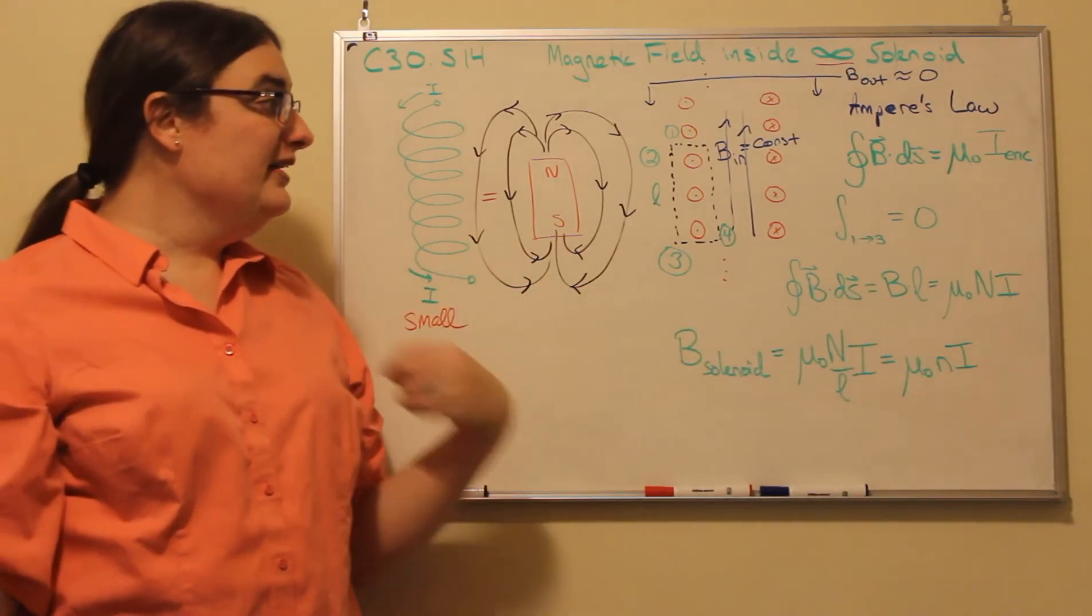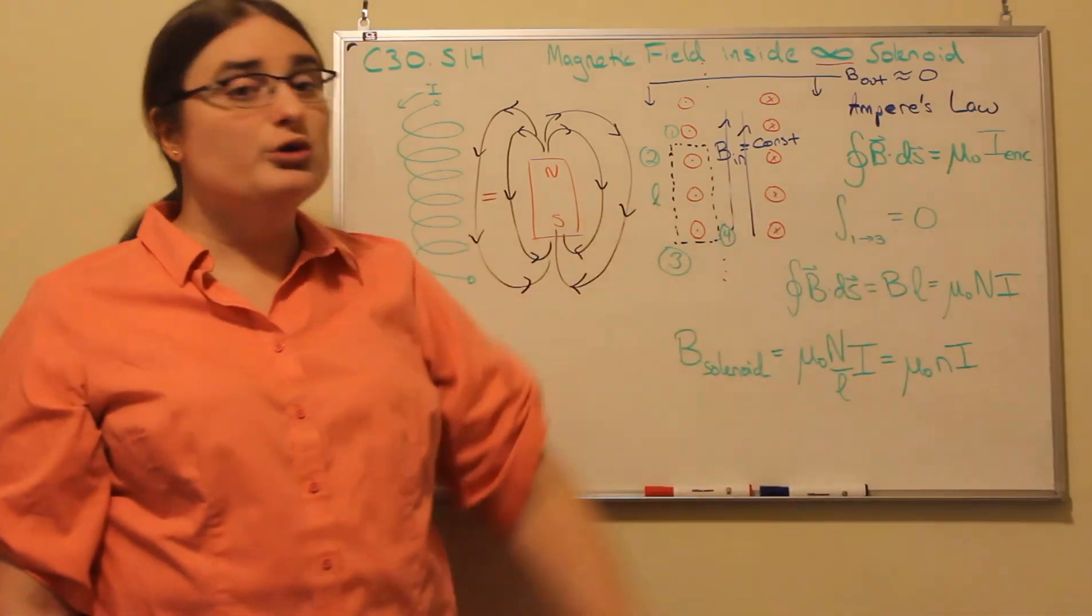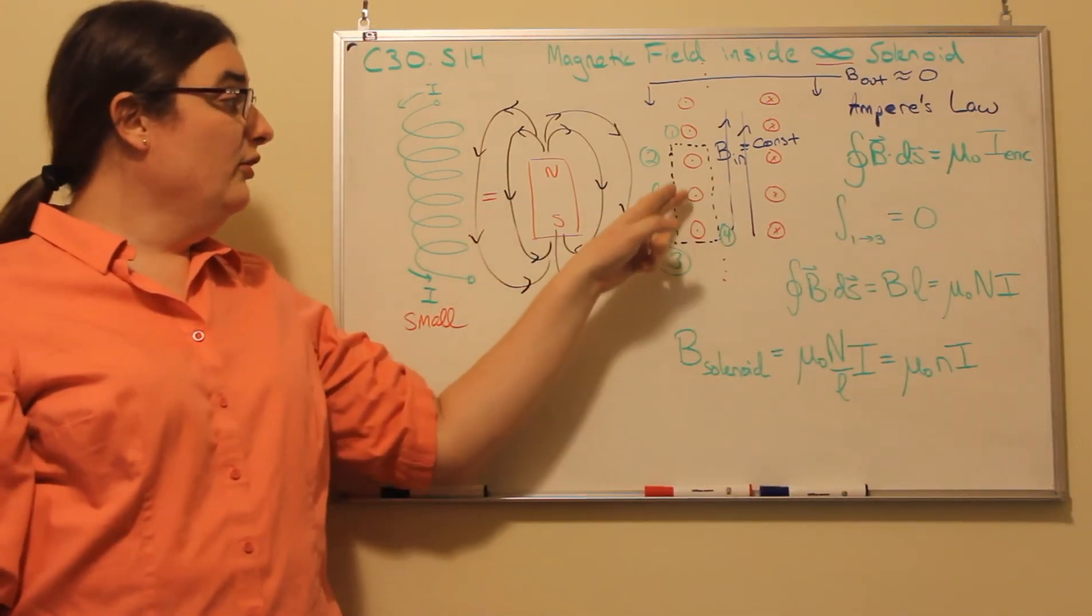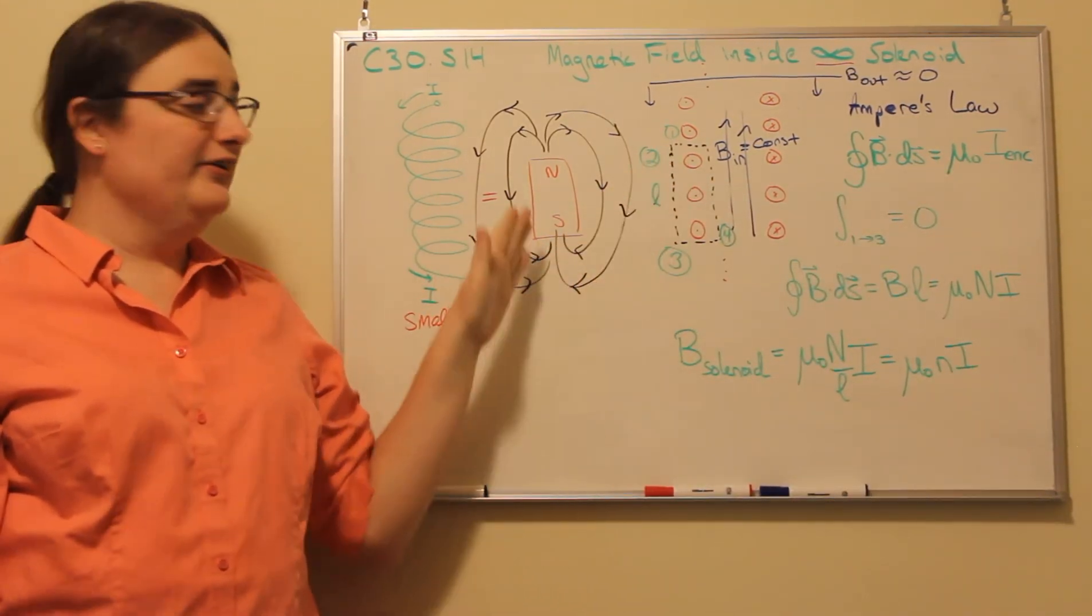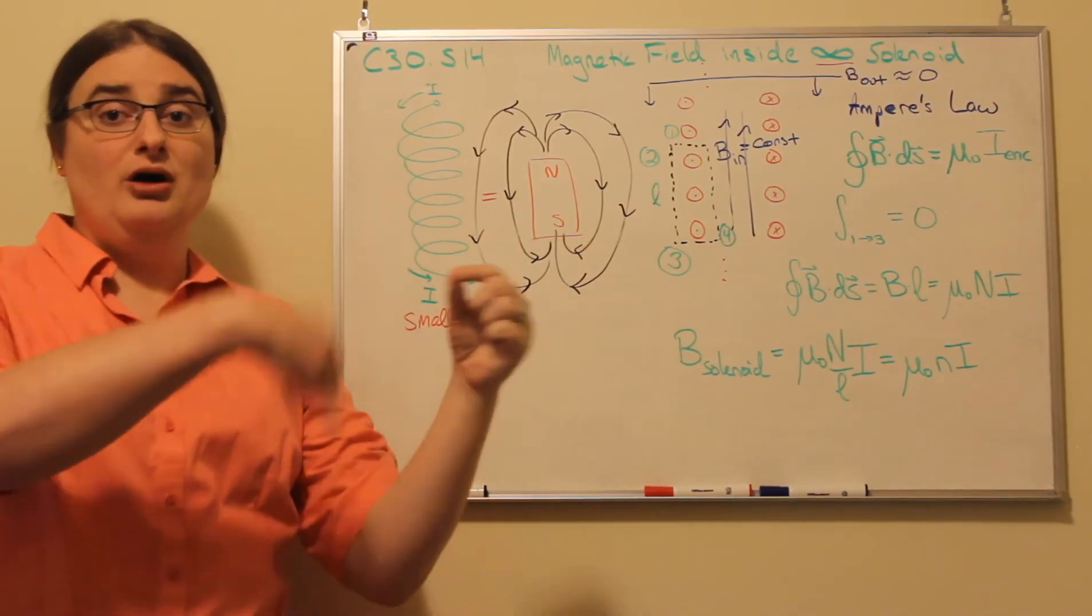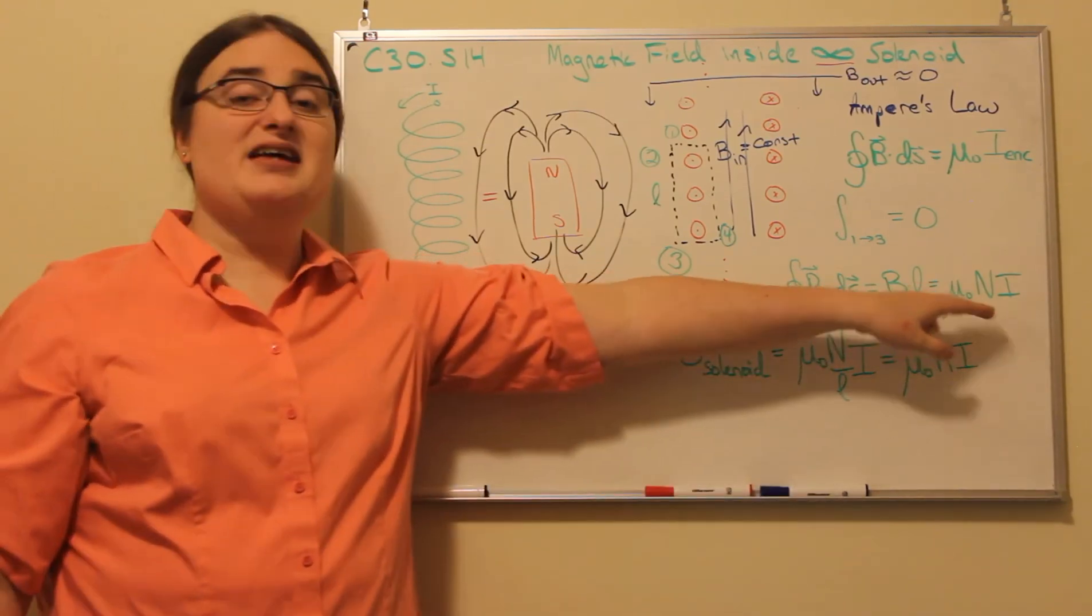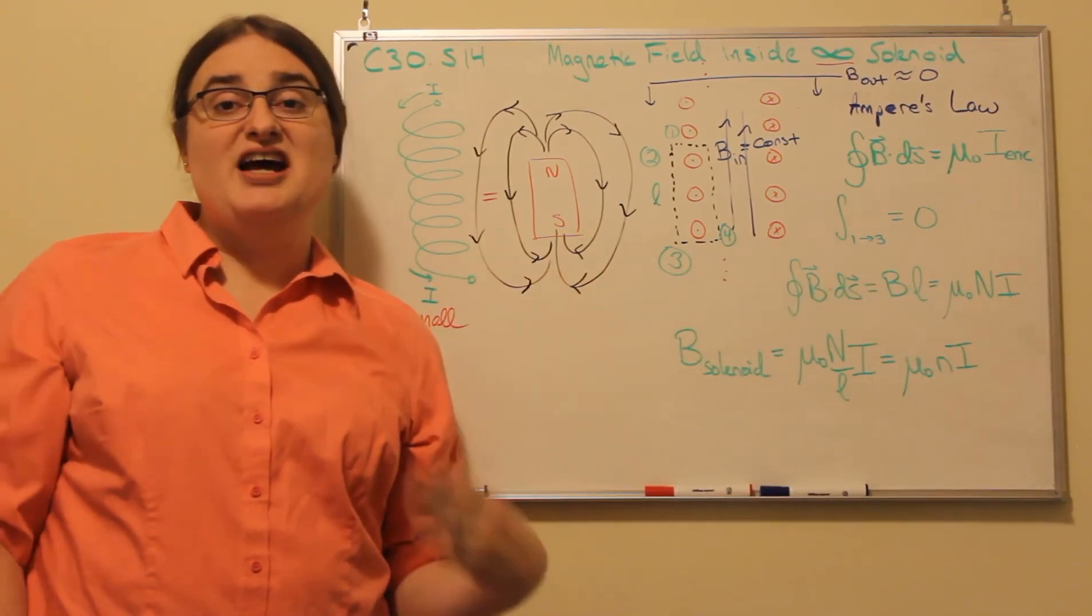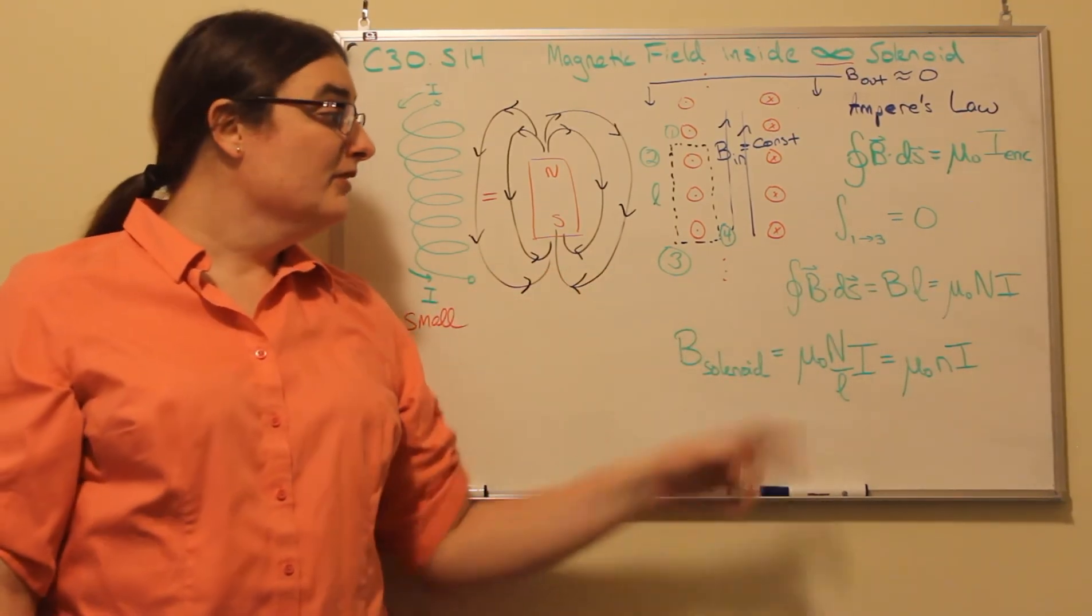That would be equal to mu naught times the total current enclosed. There are going to be n loops of wire that I find inside my box, and since it's a coil where all loops are hooked up to each other, that means that each one of those loops would have the exact same current I.